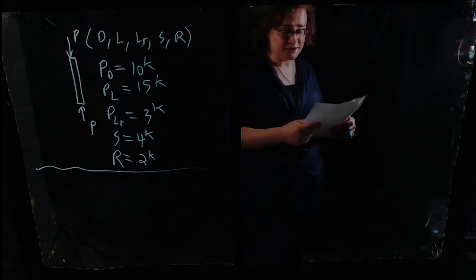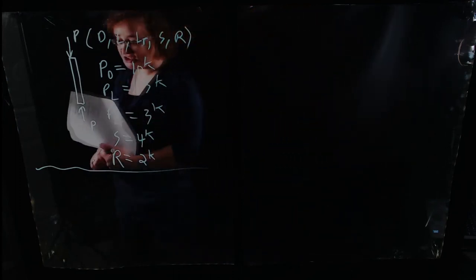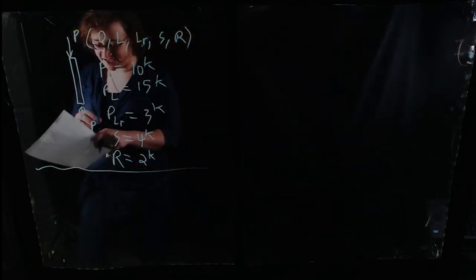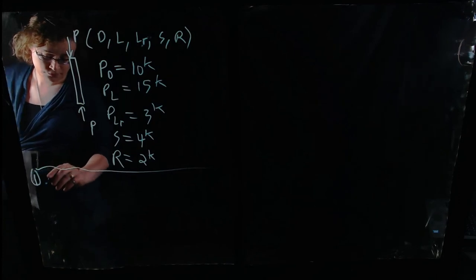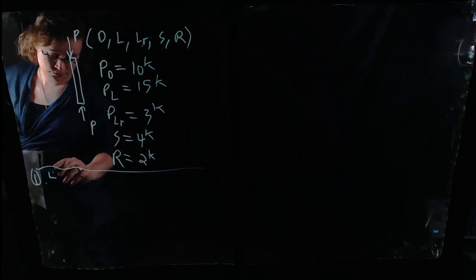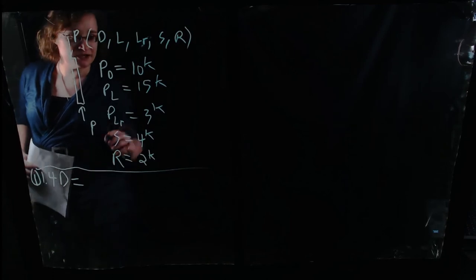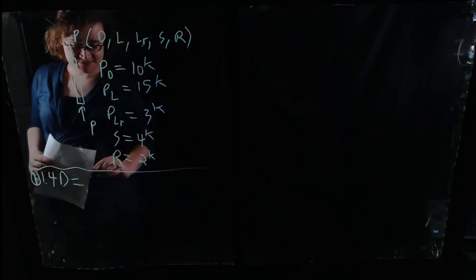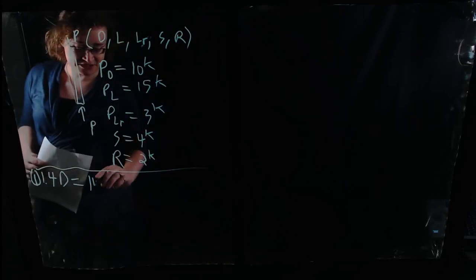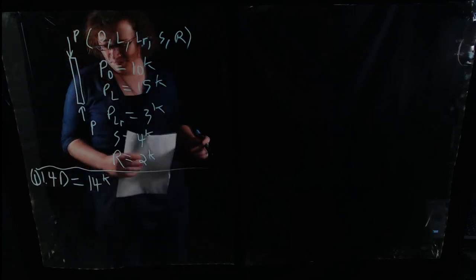For load combination 1, which is 1.4 times dead: 1.4 × 10 kips = 14 kips. Fairly simple.